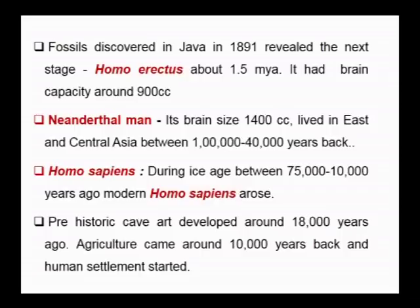Neanderthal man had a brain size of 1400 cc and lived in East and Central Asia between 1,00,000 to 40,000 years back. Homo sapiens, during the ice age between 75,000 to 10,000 years ago, arose as modern Homo sapiens. Prehistoric cave art developed around 18,000 years ago. Agriculture came around 10,000 years back and human settlement started.